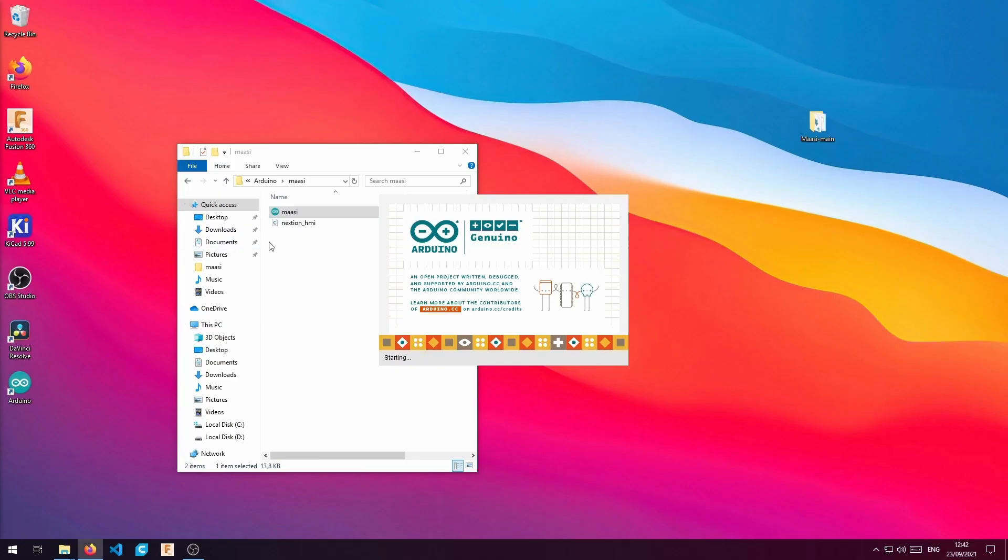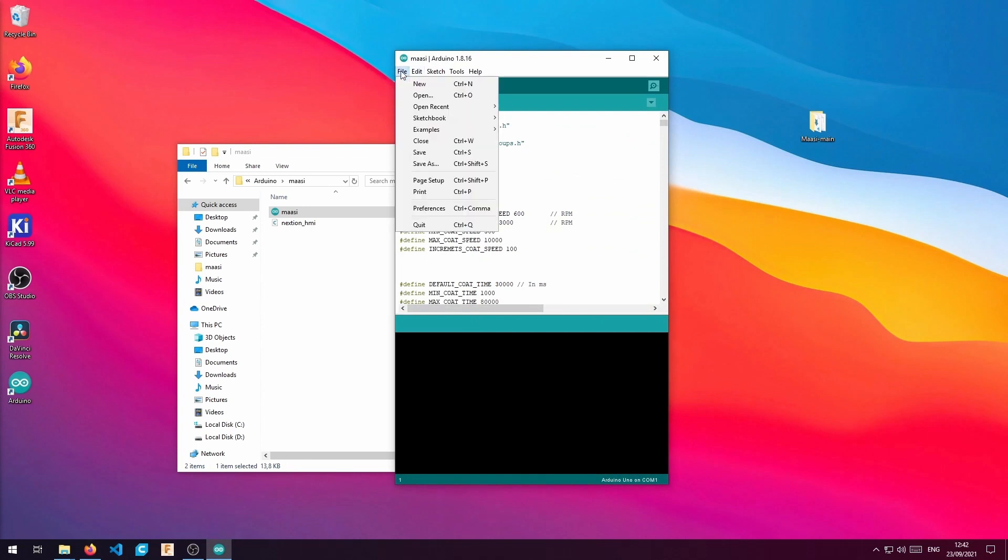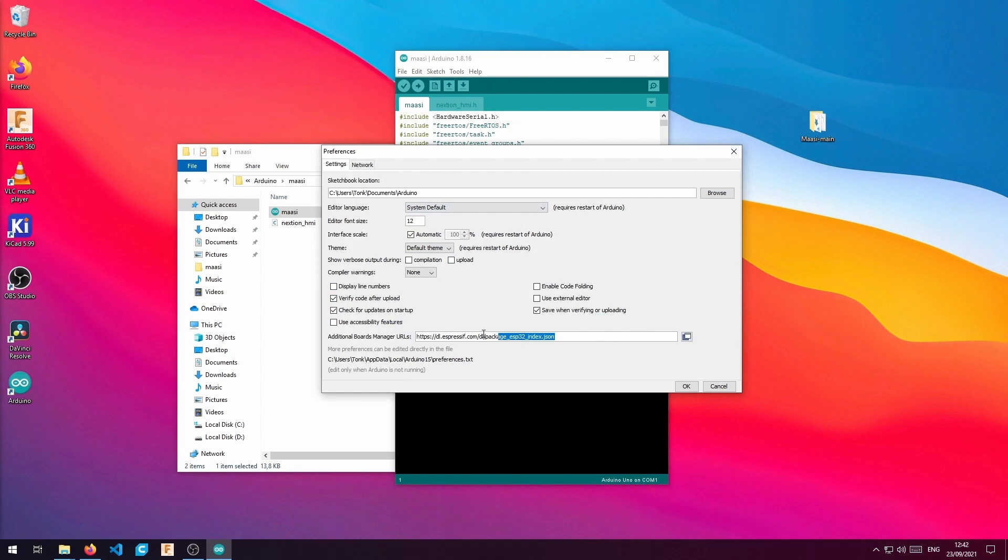The first step is to compile and flash the ESP32. To do so we have to open the Arduino file and then make sure we have the Expressive Board Manager installed. You can find this address in the description of the video.